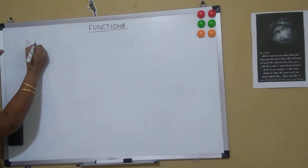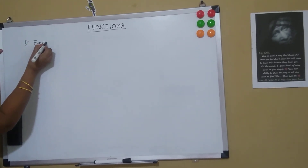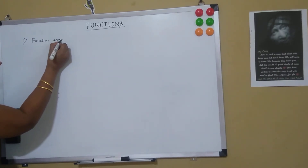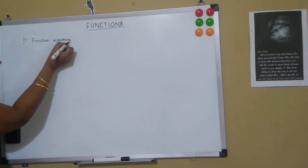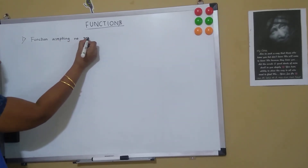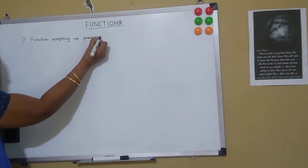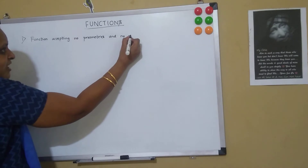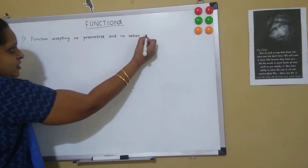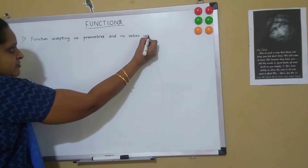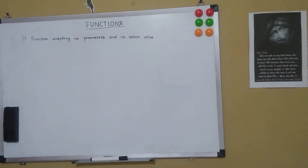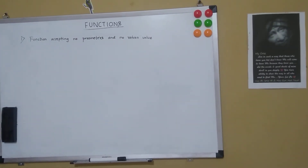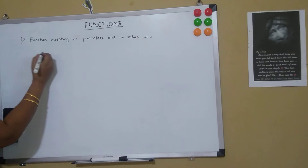Firstly, let us look at a function accepting no parameters and no return value — it is not accepting any parameters and it is not returning anything back to the caller function. A code example would be: